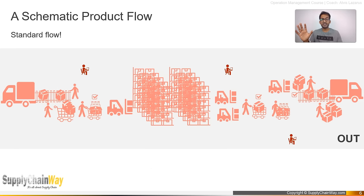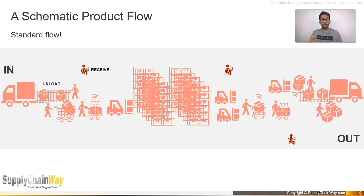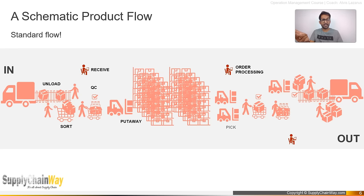To see this end-to-end in one view: from the left — the shipment arrives, completes security check, products are unloaded, received, sorted by zone, quality checked, and put away into their storage location. Then an order is received — sales order, delivery order, or transfer order — pick tags are generated, products are picked, quality checked, sorted, packed, invoiced, loaded onto a truck, and shipped out.